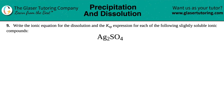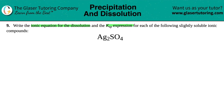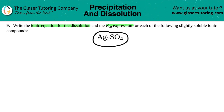Number nine: write the ionic equation for the dissolution and the Ksp expression for each of the following slightly soluble ionic compounds. We have silver(I) sulfate, which is Ag₂SO₄. So we have to write a dissolution equation, which means that this compound is going to dissolve into its ions — hence an ionic equation.